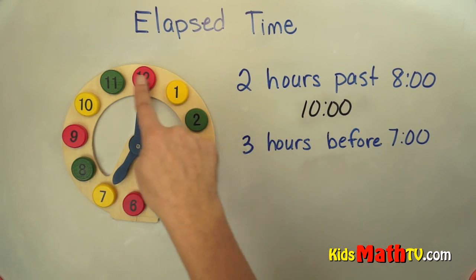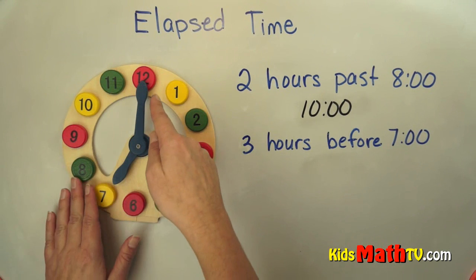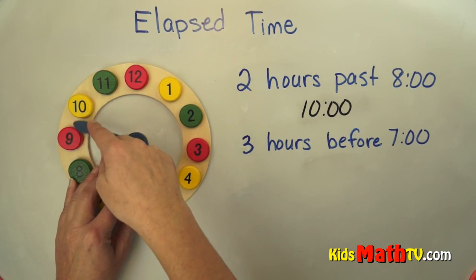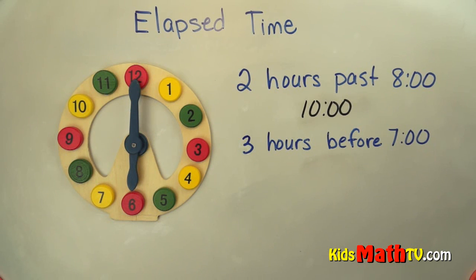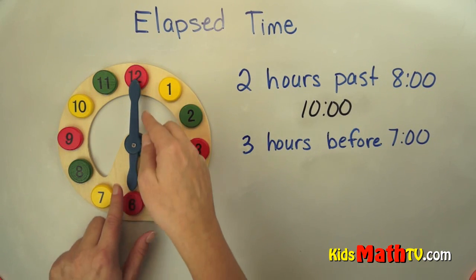Three hours before. We're going to go backwards or counterclockwise three hours. So the minute hand goes around one time. One time would be six. One hour before is six o'clock.